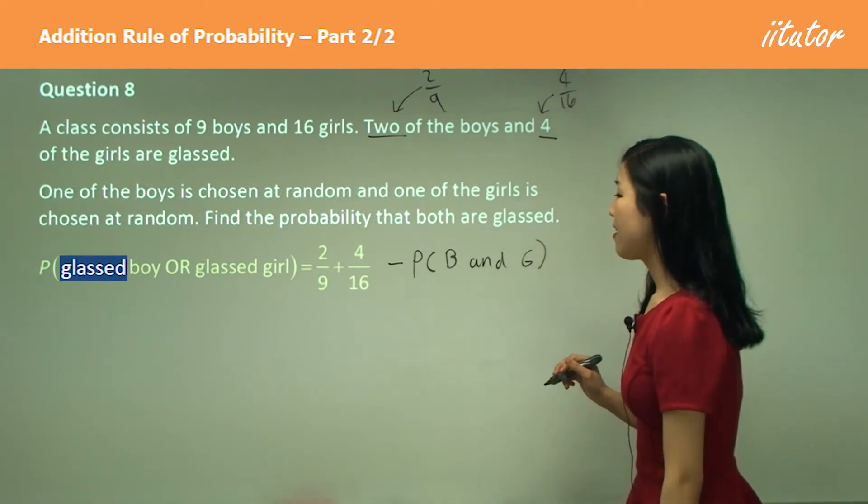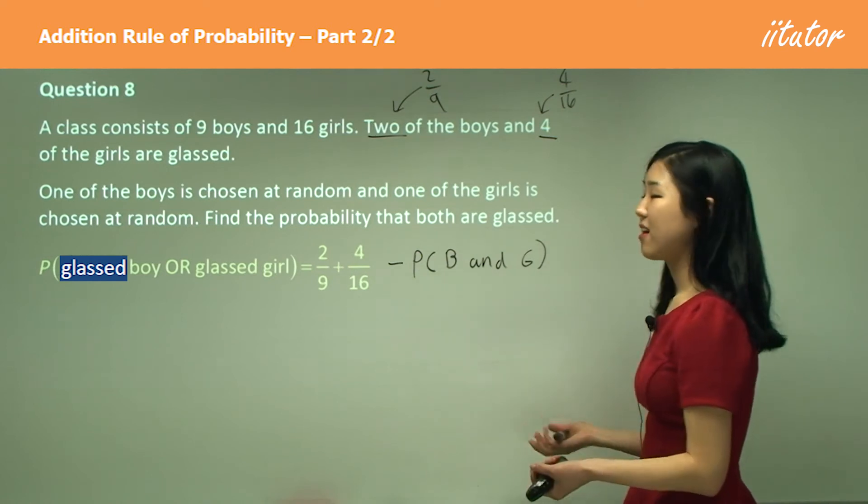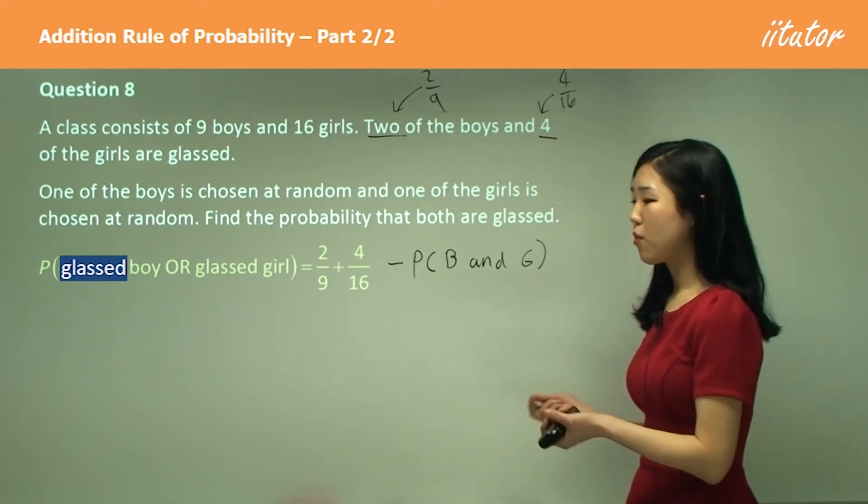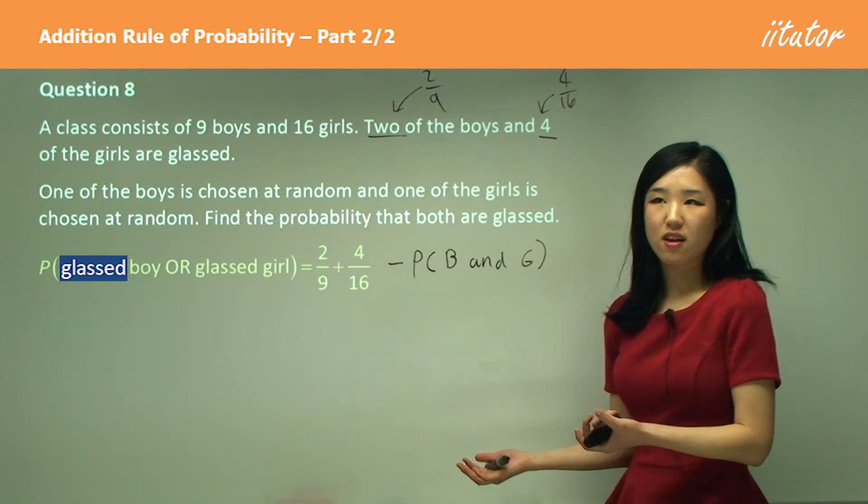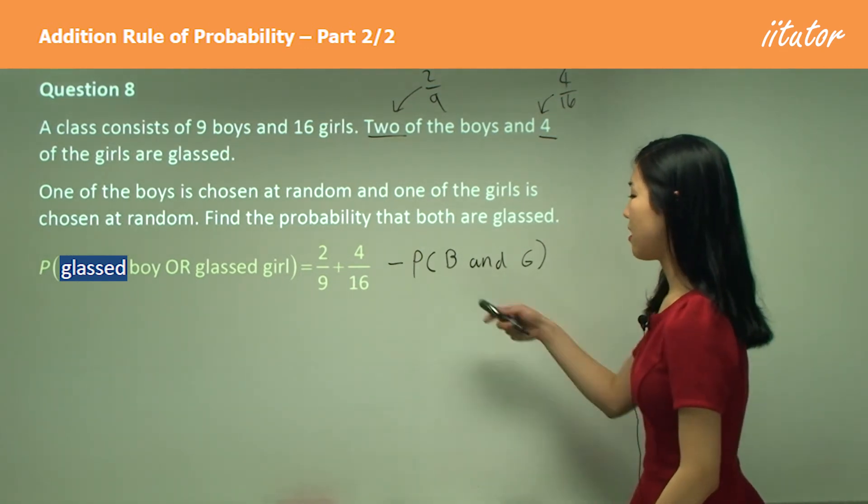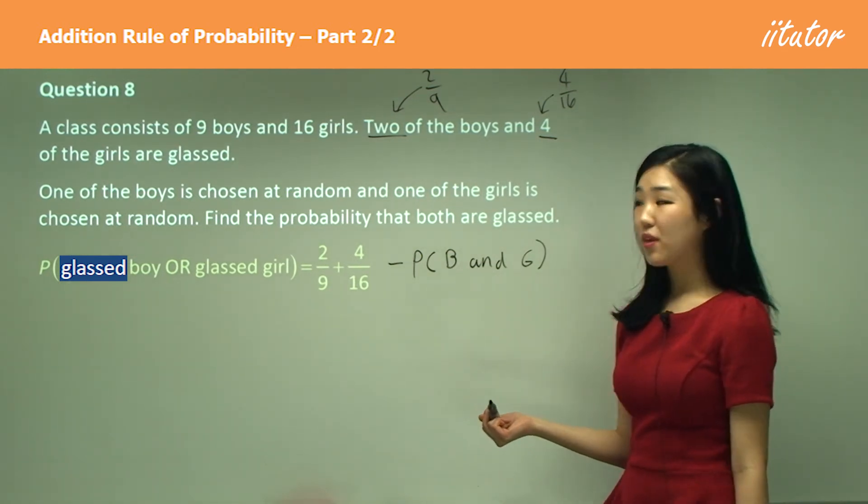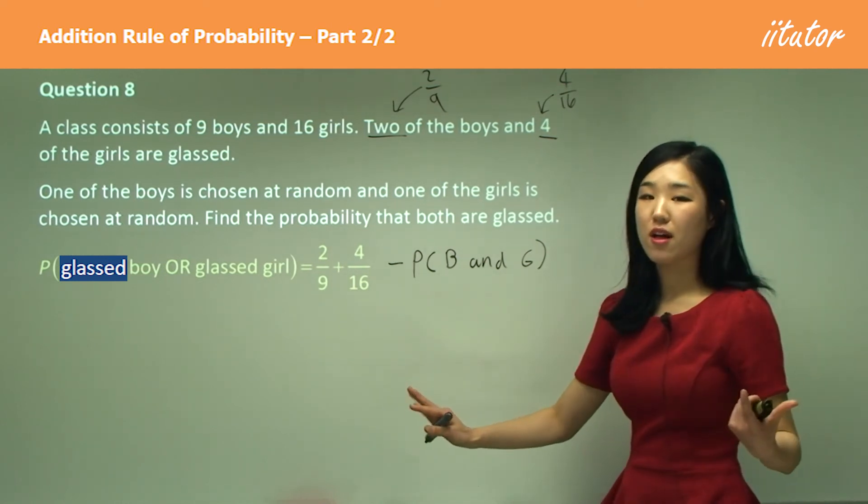But in this case, the probability of the boy and the girl being glassed together is not going to happen. We can't have boy and girl glassed together. That's not relevant to this part of the question. So we don't consider the probability of boy and girl both being glassed.